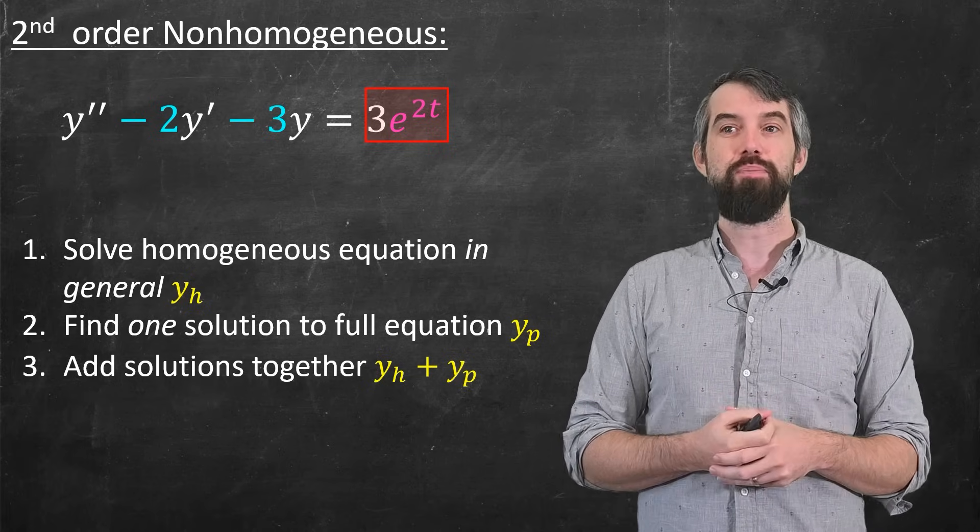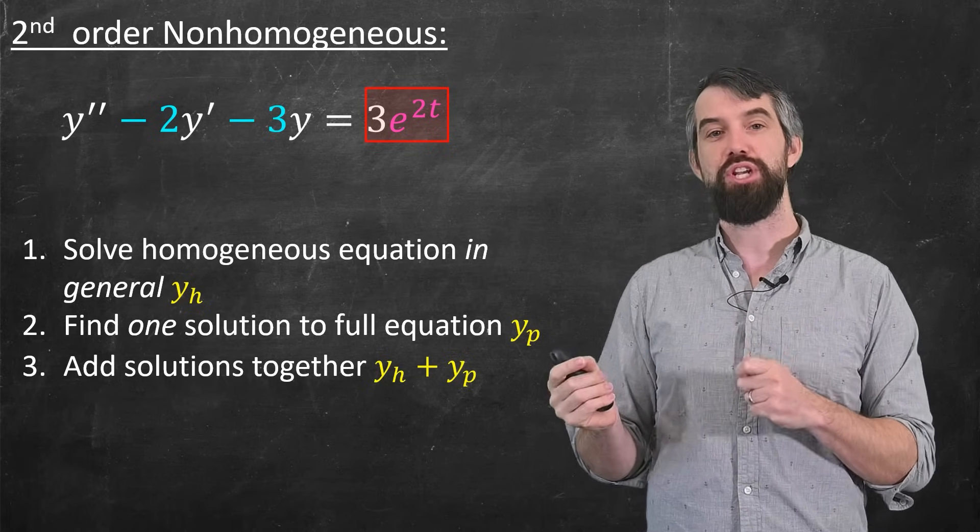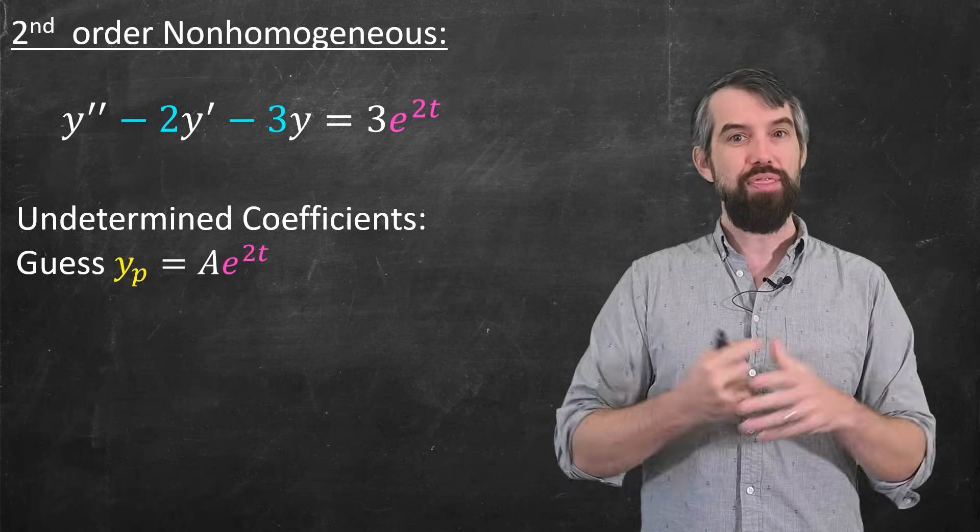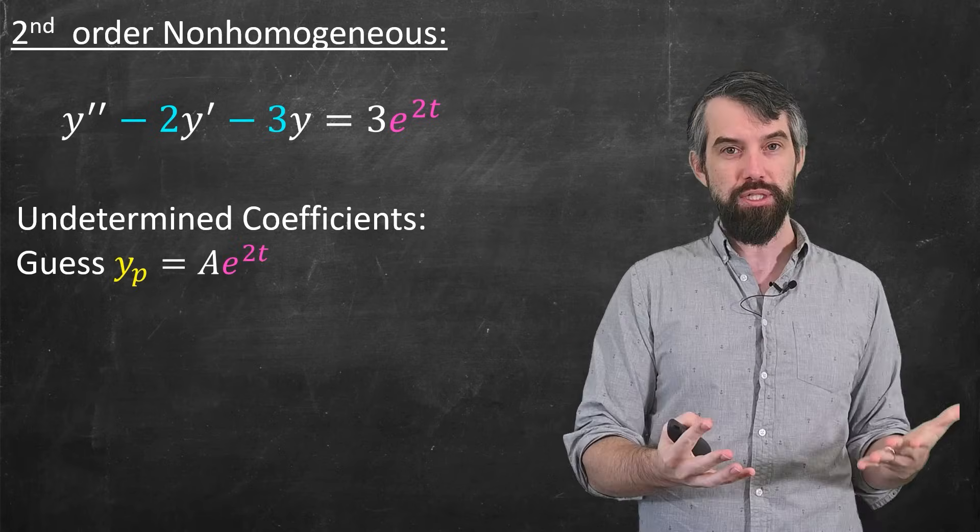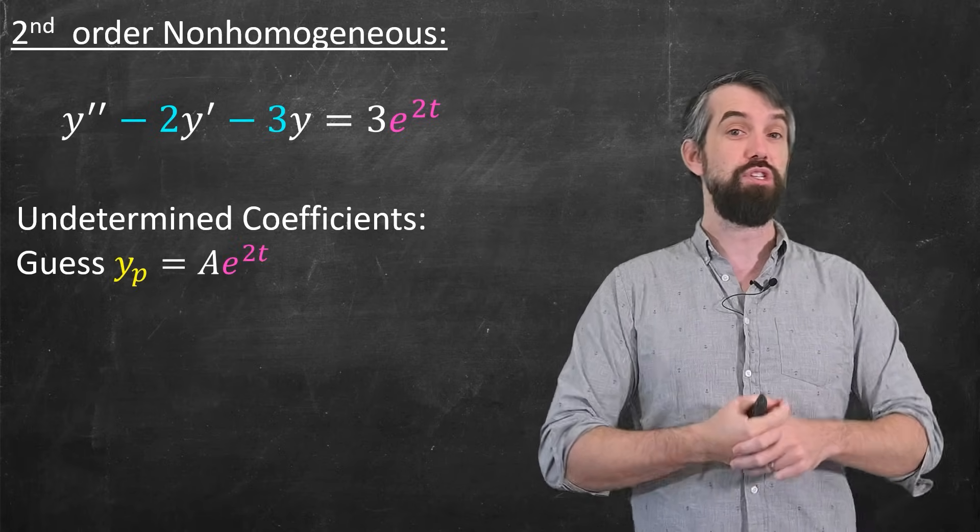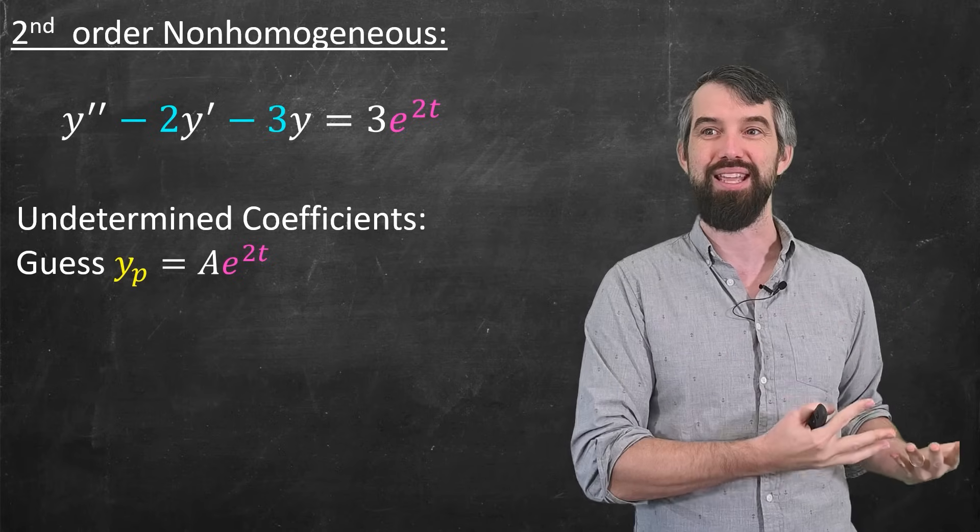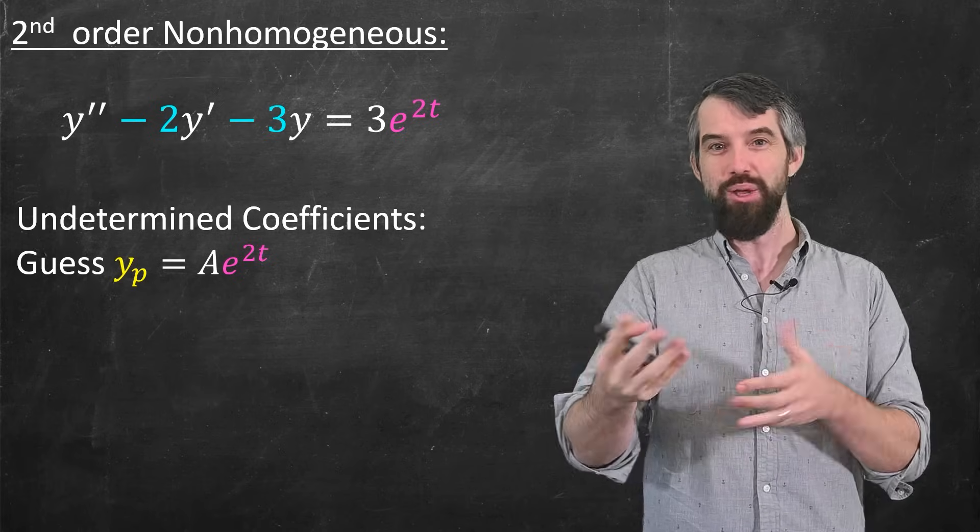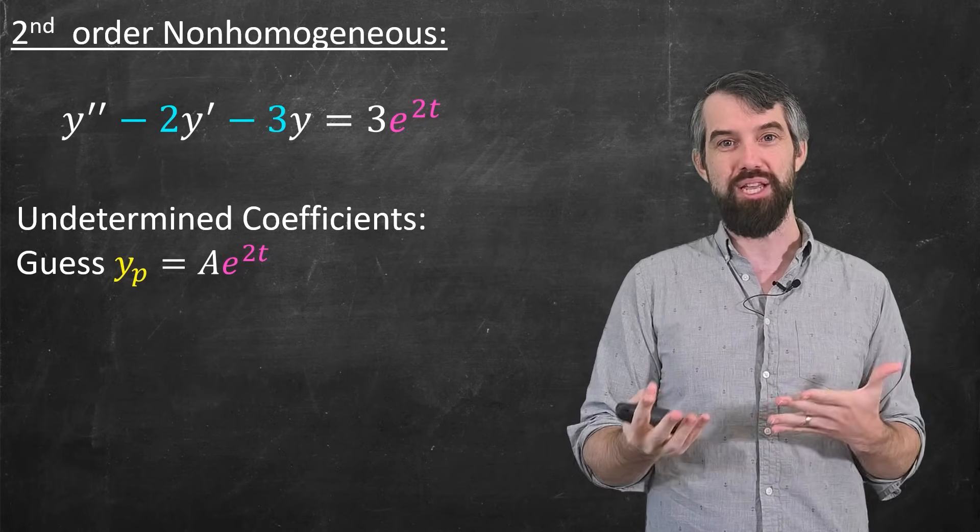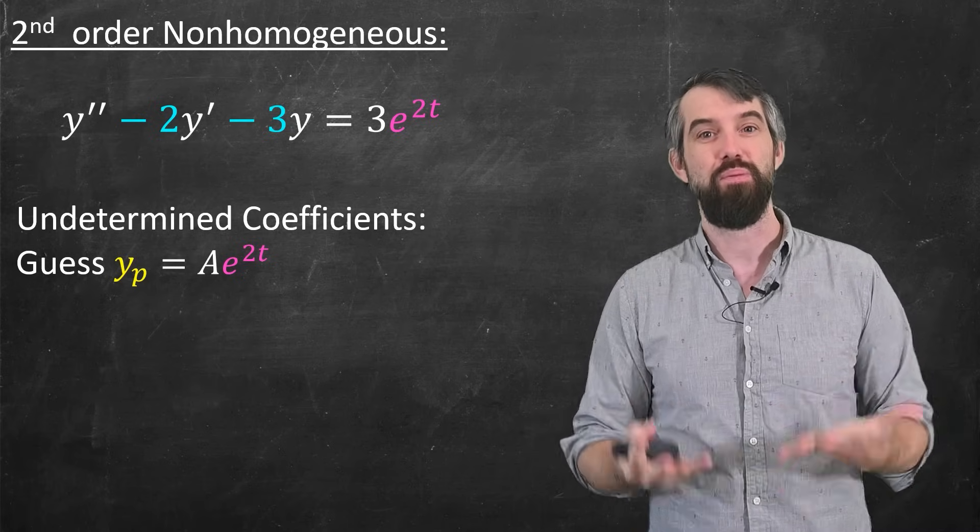And so there's a couple different methods here. It depends on what the inhomogeneity is. One of the standard methods is called undetermined coefficients. And for undetermined coefficients, what you do is you just guess a solution that is kind of the same form as the inhomogeneity. So 3 e to the 2t, we're going to guess a e to the 2t, where a is an undetermined coefficient.